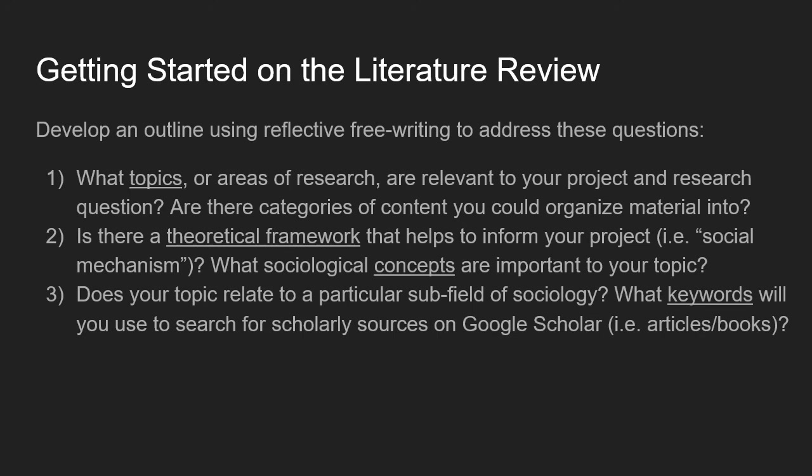Consider what sociological concepts are important to your topic — a social mechanism or theoretical framework. Does your topic relate to a subfield of sociology? What keywords will you use to search for scholarly sources on Google Scholar or JSTOR? Finding articles and books using keywords can be a trial-and-error process. You might try different keywords and learn some of the academic lingo for referring to various concepts, tweaking your keywords along the way.